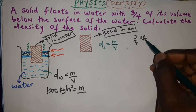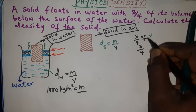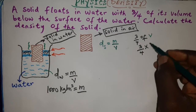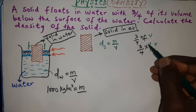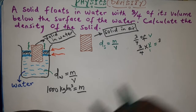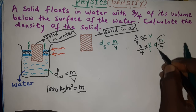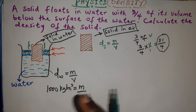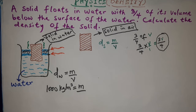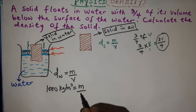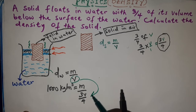In mathematics, 3/4 of V can be written as a multiplication: 3/4 × V, giving us 3V/4. So the volume submerged in the water is 3V/4, and I replace the volume term in the equation with 3V/4.